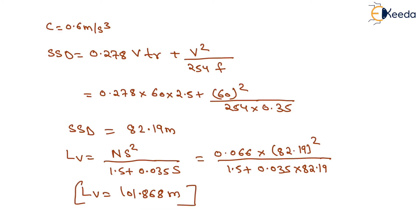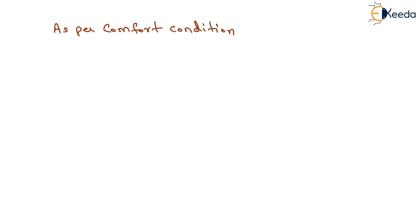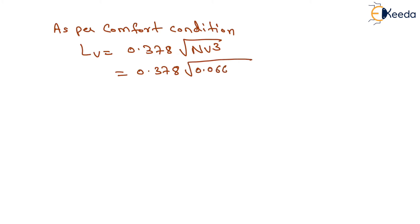Now we calculate the length of valley curve as per the comfort condition. As per comfort condition, the length of valley curve equals 0.378 times the square root of (N × V³ / c). The value of N is 0.066, V is 60, and c is 0.6. On solving, the length of valley curve as per comfort condition equals 45.13 meters.